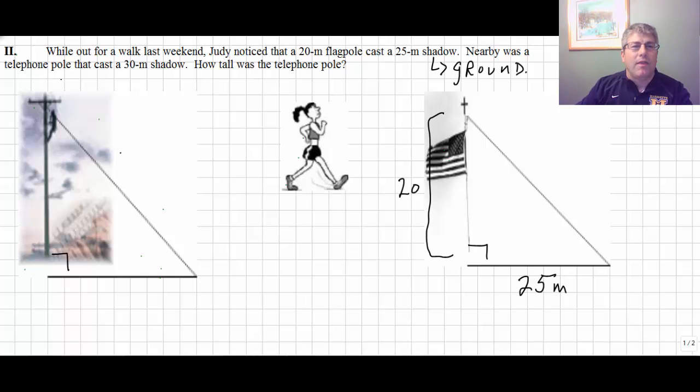But she noticed that the telephone pole cast a 30 meter shadow. Judy must have a pretty keen eye. She can look and measure these things exactly. Very impressive. But she wants to find out the height of the telephone pole or x.